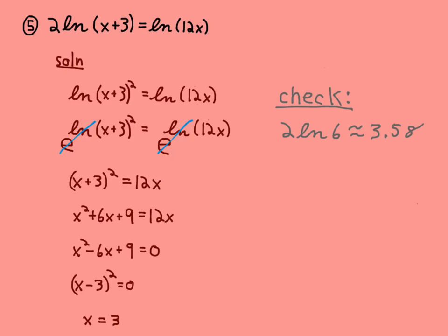So, on the left side, 2 ln of 3 plus 3, ln of 6 is approximately 3.58. On the right side, you have ln of 36 when you plug in the 3, which is the same.